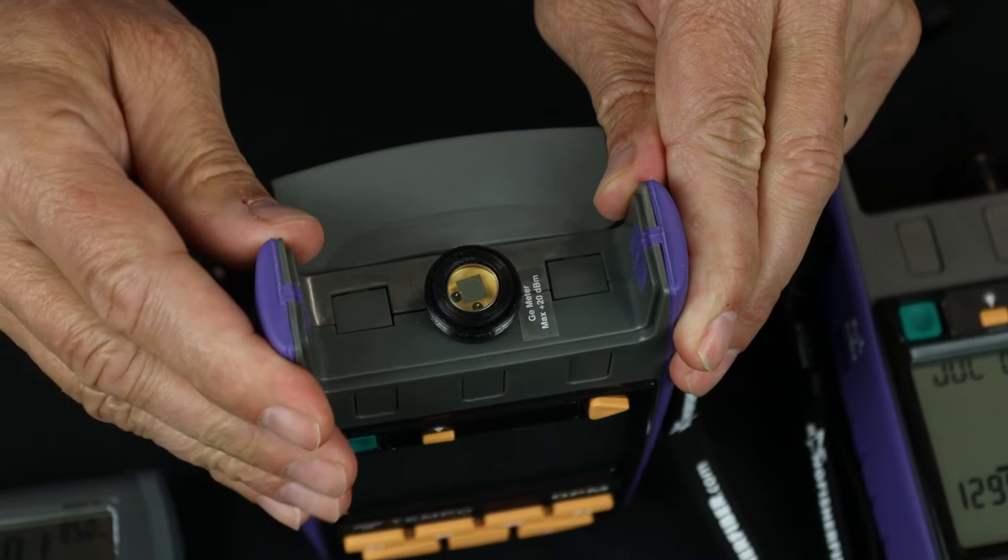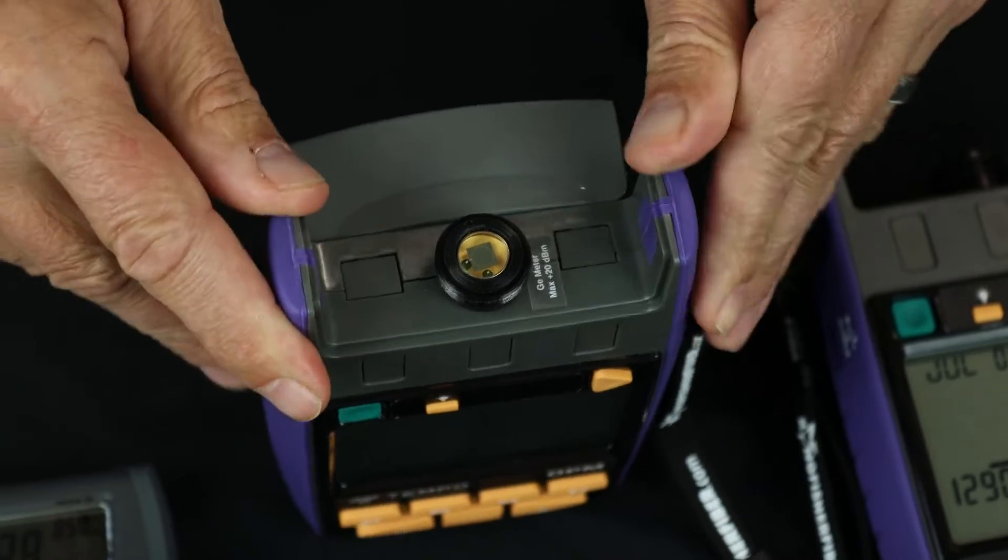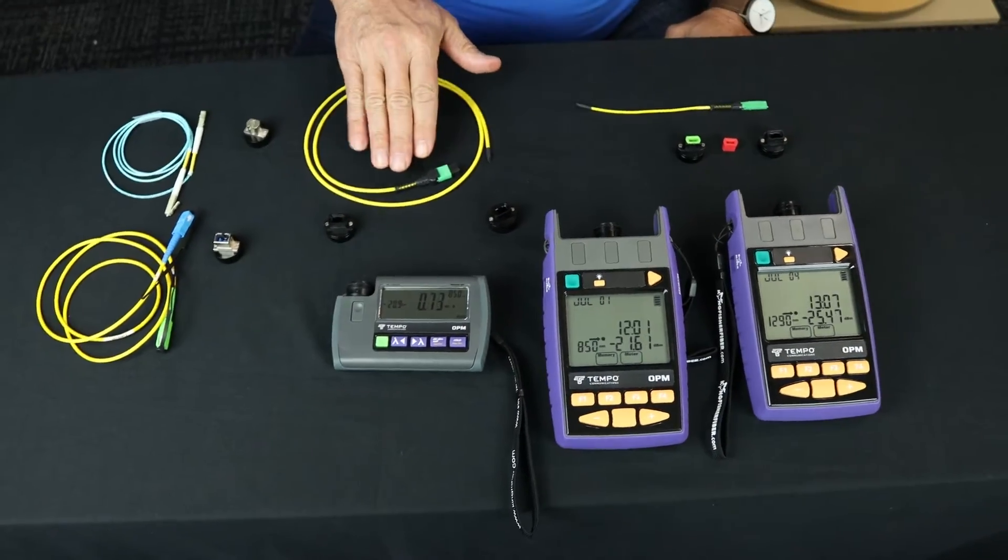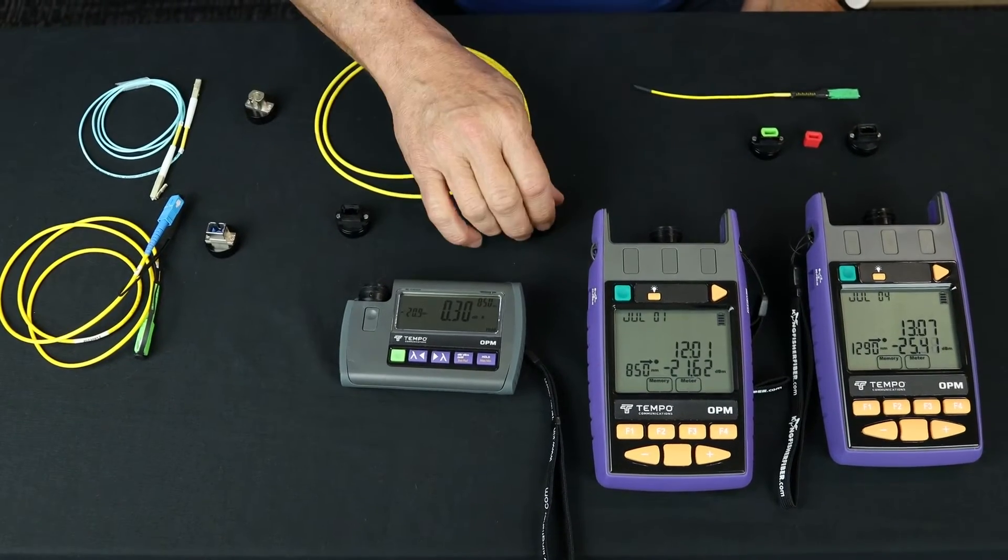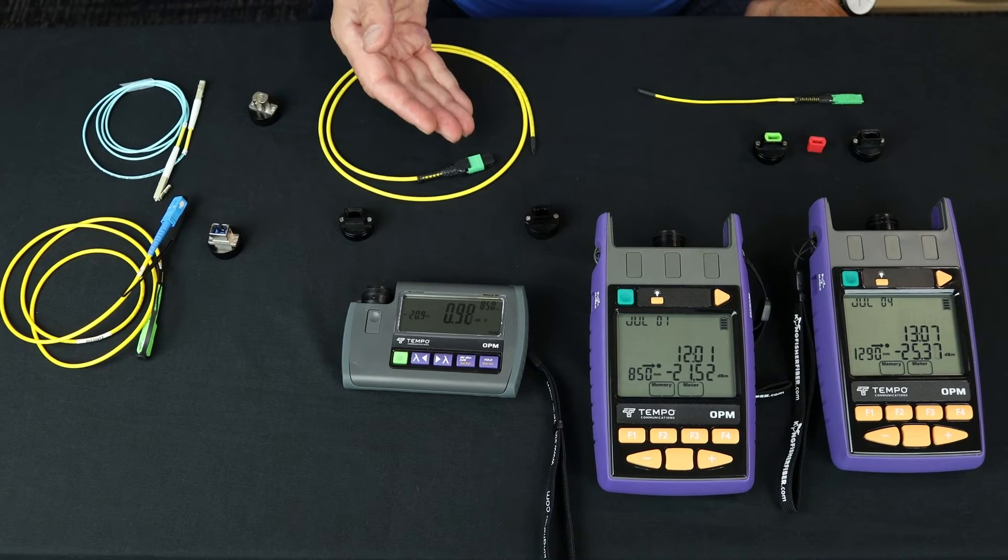So these five millimeter detectors are suitable for testing base 12 connectivity. That's 8 or 12 fiber, or 24 fiber MTP or MPO. And we have adapters, we have MPO adapters for that connectivity.